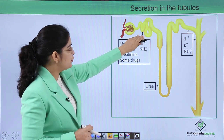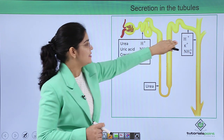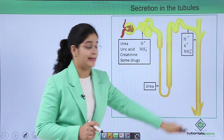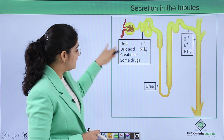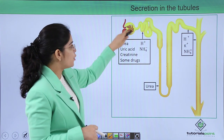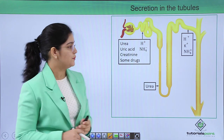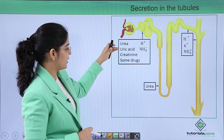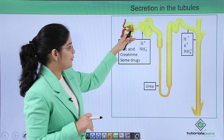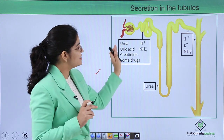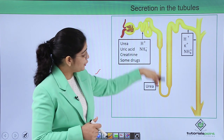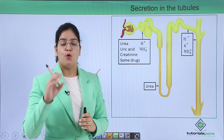Now let's learn what different solutes are secreted in the tubular structures. This is our proximal convoluted tubule, this is the loop of Henle, this is the distal convoluted tubule, and this is the collecting duct. In the proximal convoluted tubule, mainly urea, uric acid, creatinine, some drugs, hydrogen ion, and ammonia are secreted.